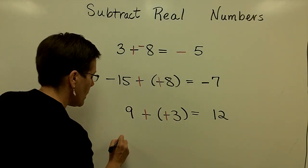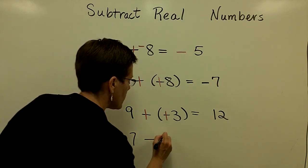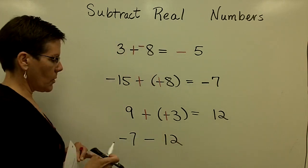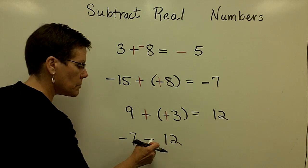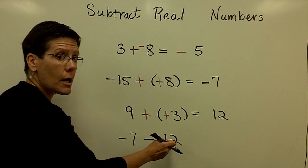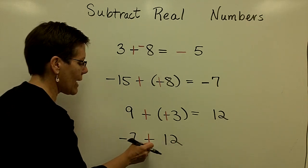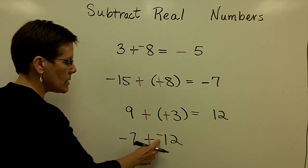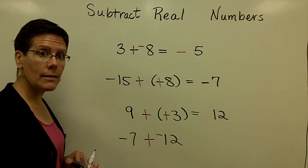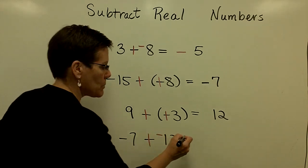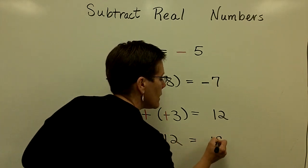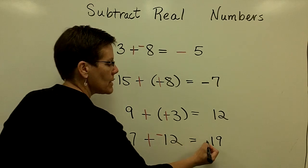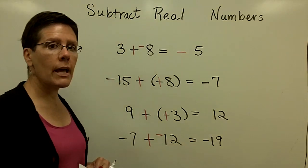Let's do one more. A negative 7 minus 12. So again, a negative 7, this is a subtraction symbol. Subtract a positive 12, so I'm going to add a negative 12. And then because these two values have like signs, I will add their absolute value, that is 19, and I'll give my answer the common sign that they share, which is a negative sign.